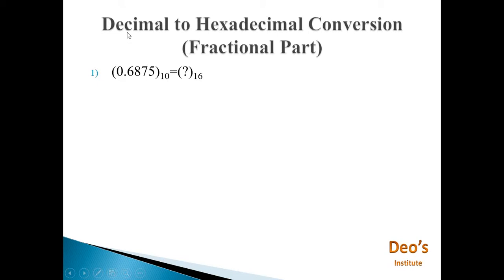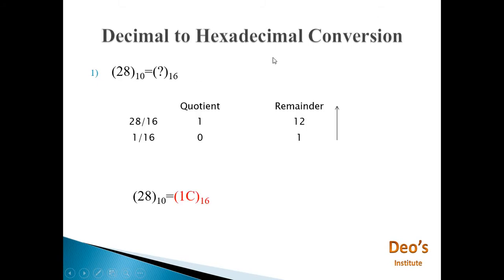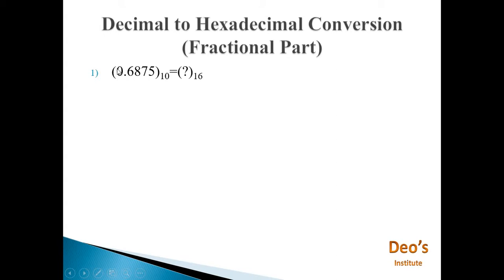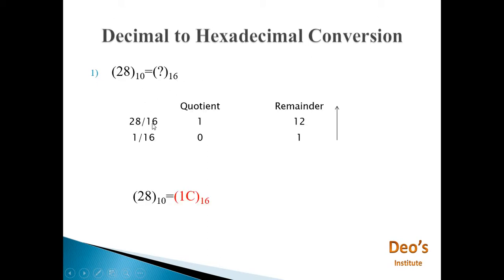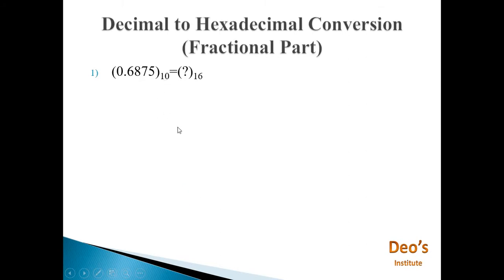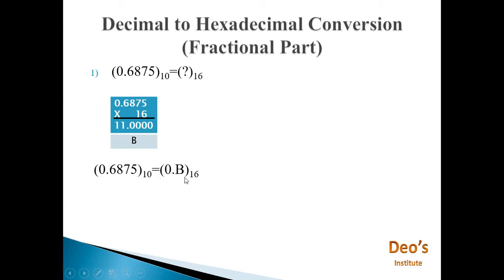Next is decimal to hexadecimal conversion for the fractional part. For the fractional part, we multiply by 16 instead of dividing. So 0.6875 multiplied by 16 gives 11.0000. We remember the integer part 11, and since the fractional part is 0 we stop. 11 is represented as B, so 0.6875 is equal to 0.B in hexadecimal.